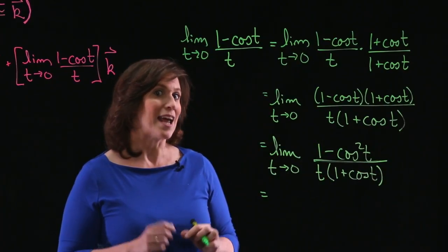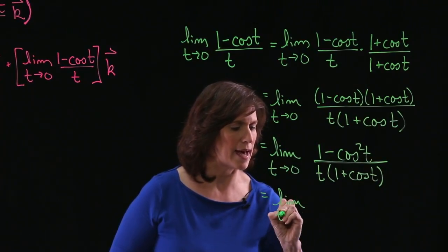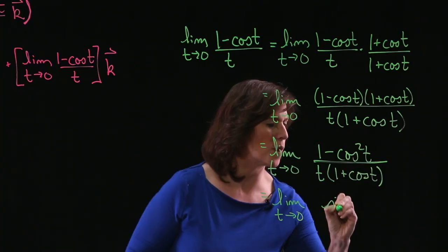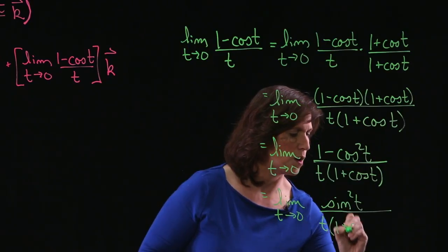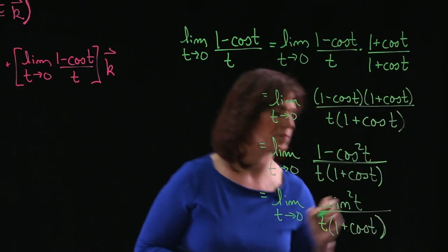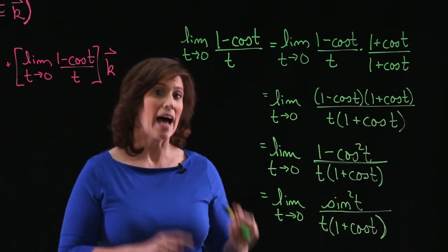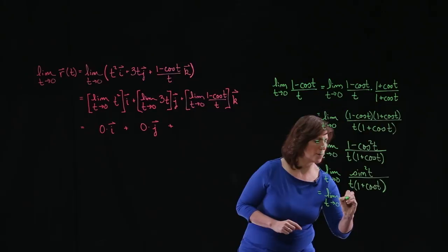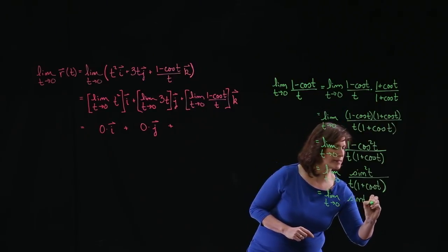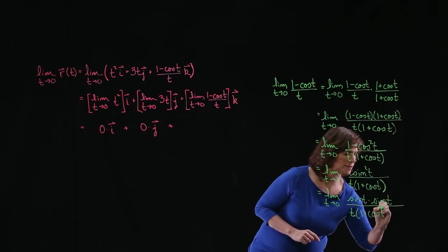Well, 1 minus cosine squared t I know is sine squared t by the Pythagorean theorem. So I'll rewrite this as the limit as t approaches 0 of sine squared t all over t times the quantity 1 plus cosine t. And I also notice that sine squared t could be written as sine t times sine t. So let me do that as well. So limit as t approaches 0 of the sine of t times the sine of t all over t times the quantity 1 plus cosine t.